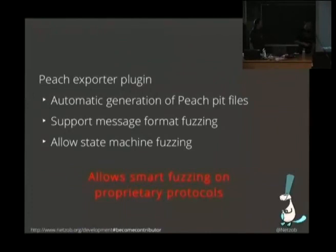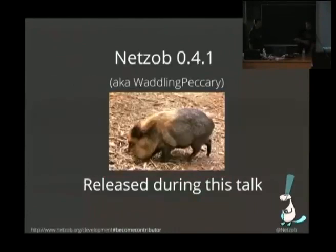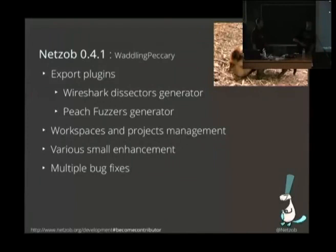We also provide an exporter for Peach, aimed at security and pen testing, which generates configuration files to fuzz implementations of proprietary protocols. It allows creating mutations in the vocabulary or grammar of the protocol, so you can fuzz the state machine of an unknown protocol. We are proud to release during this talk Netzob 0.4.1, named 'Waddling Peccary,' thanks to Olivier Tétard. This release brings the new exporters, and we also provide workspace management capabilities so you can save, export, import, and manage your traces.